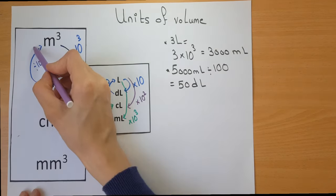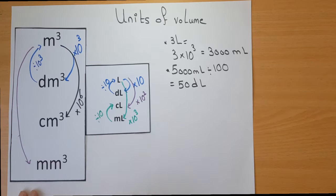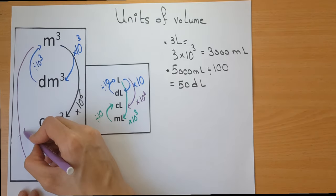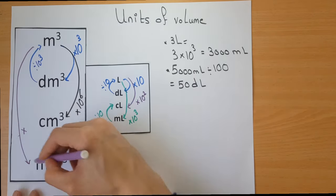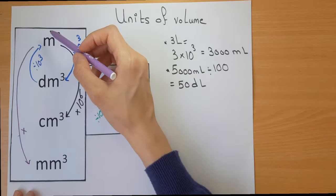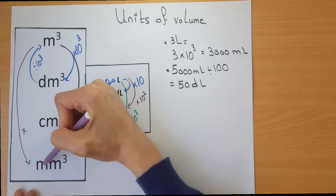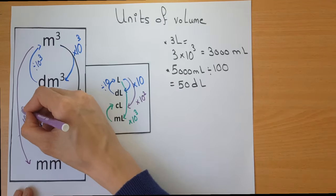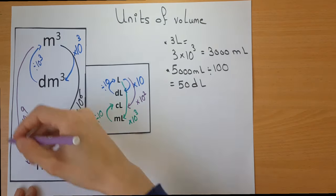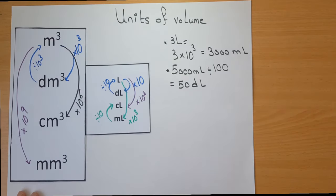If I want to convert from meter cube to millimeter cube, then going down, I multiply. How many steps? Three steps, so times 10 to the power of 9. And of course, if I'm going up, I divide.